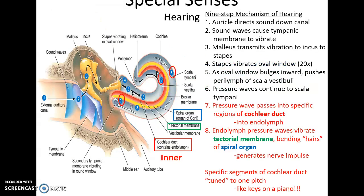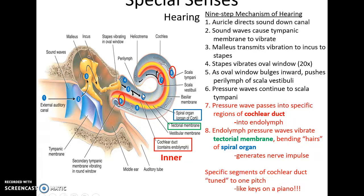The story of hearing: the auricle funnels sound waves into the external auditory canal, which hits the tympanic membrane, causing it to vibrate. This causes the malleus to vibrate, which causes the incus to vibrate, which causes the stapes to vibrate, which causes vibrations in the oval window. This passes vibrations into the scala vestibuli as pressure waves, which move down the cochlea to the frequency-attuned area, pass through into the cochlear duct, hit the tectorial membrane, bend the hair bundles of the hair cells, and generate a signal transmitted to the sensory neurons, which carry it into the brain.